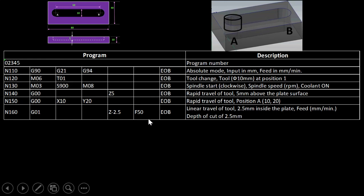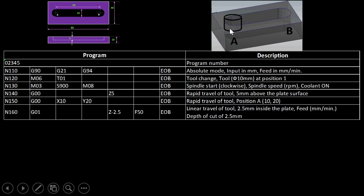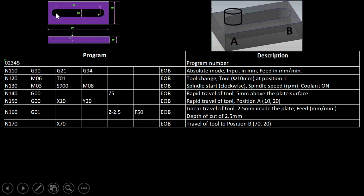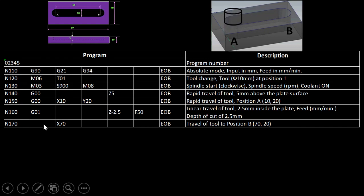Now the cutter moves from A to B. Since Y remains at 20, only X changes from 10 to 70. We write X70 with G01 remaining the same for linear interpolation. The feed F50 is not repeated since it carries over. End of block. The cutter is now moving from A to B.